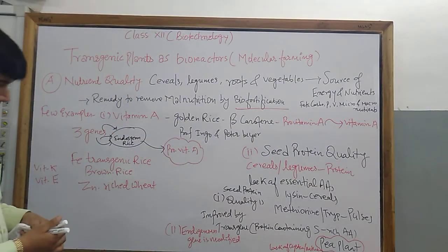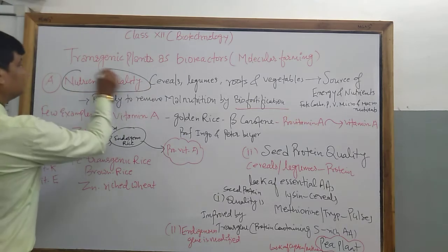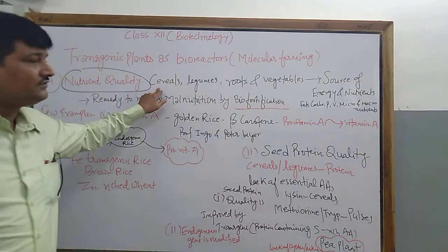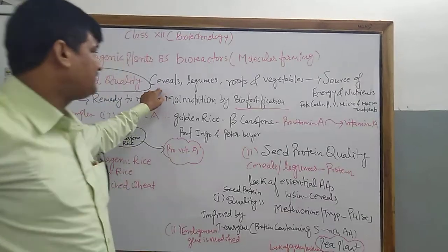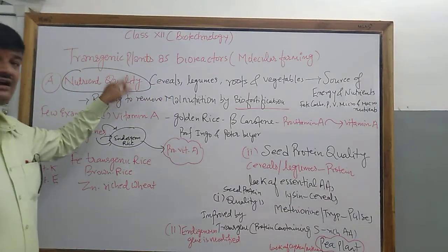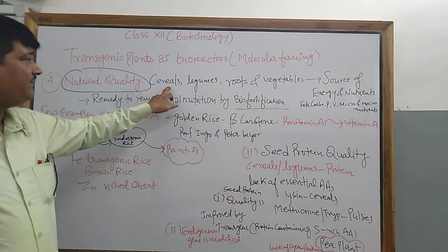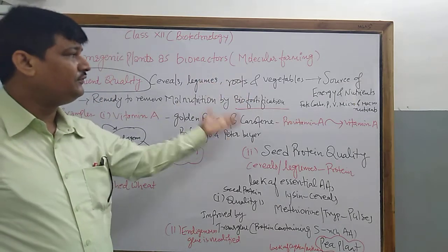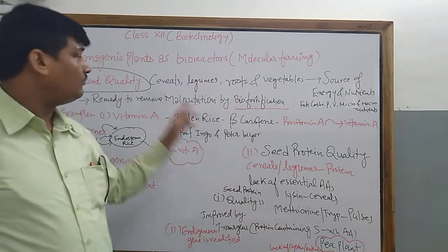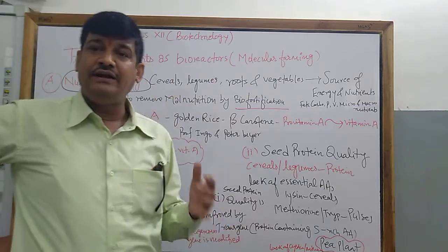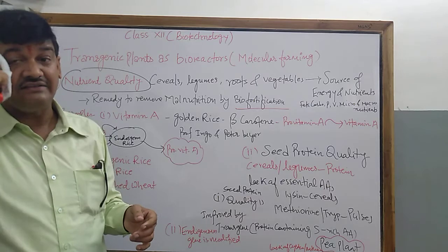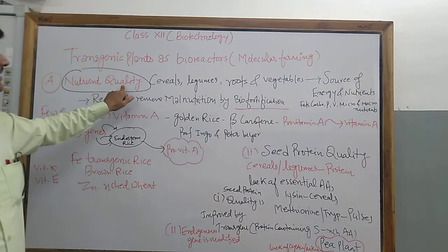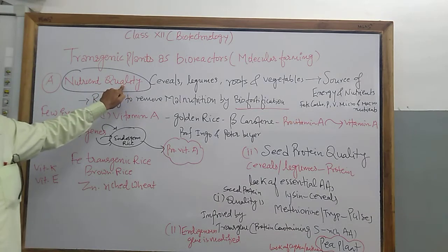The first purpose of using transgenic plants as a bioreactor is nutrient quality. The staple food of India is cereals, including rice, wheat, etc. Nutrients are derived from cereals, legumes, roots, vegetables, and fruits. The sources of energy include carbohydrates, proteins, fats, and amino acids — both essential amino acids and micro or macronutrients. These are the nutrient quality values required for particular crop plants.